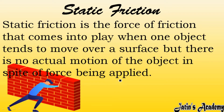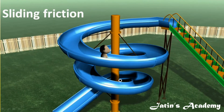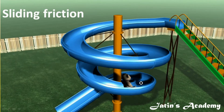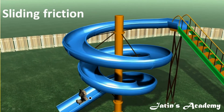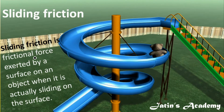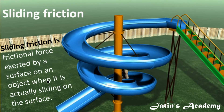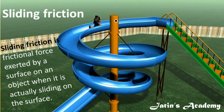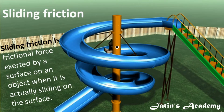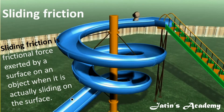Next, we are having sliding friction. As you can see from the diagram, when one object slides over the surface of another object, sliding friction is present. Sliding friction is the frictional force exerted by a surface on an object when the object is actually sliding over the surface of another object.